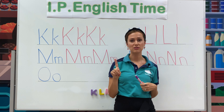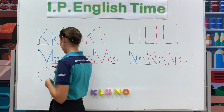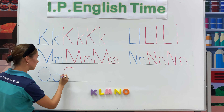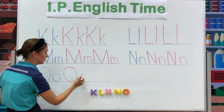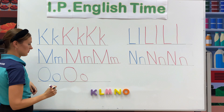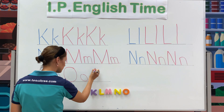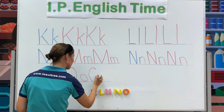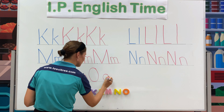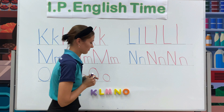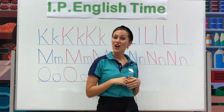Now we have one more letter — letter O. Let's write. Capital letter O and small letter O. Now we are finished with the writing.